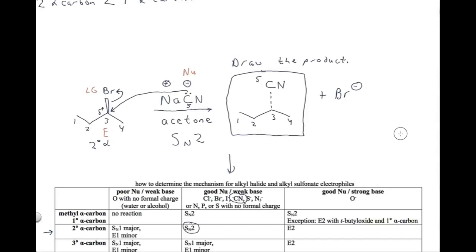Our next topic is to look at another type of leaving group. What leaving groups have we learned to use so far for SN2? We've basically learned only one type: we've learned that we can use neutral chlorine, bromine, or iodide as leaving groups. But there are other acceptable leaving groups for SN2.